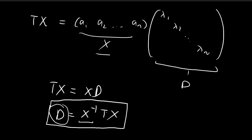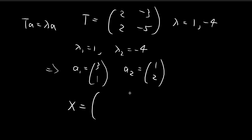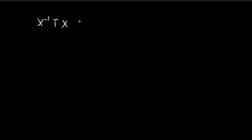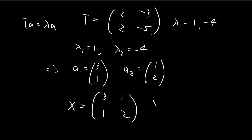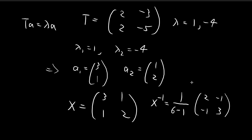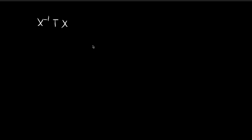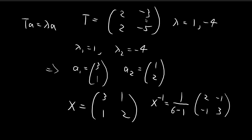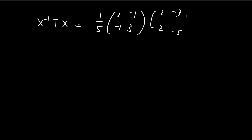So X is a 2-by-2 matrix with columns equal to a₁ and a₂: X = [[3, 1], [1, 2]]. According to our formula D = X⁻¹TX, let's compute the inverse first. The determinant is 3×2 − 1×1 = 5, and applying the standard 2×2 inverse formula gives X⁻¹ = (1/5)[[2, -1], [-1, 3]]. We then set up the product X⁻¹ · T · X.